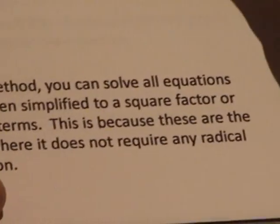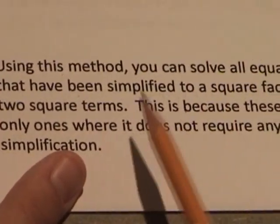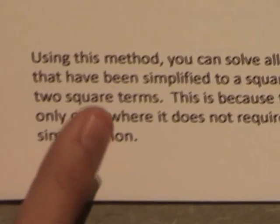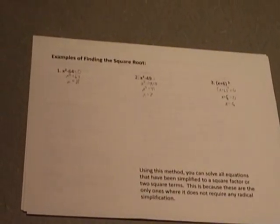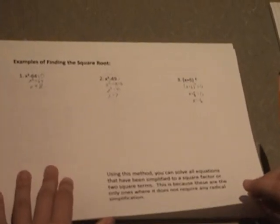Using this method, you can solve all equations that have either been simplified to a square factor, such as this one, or have two square terms, such as this one. This is because they are the only ones where they can be solved with this method cleanly, without any simplification of radicals.